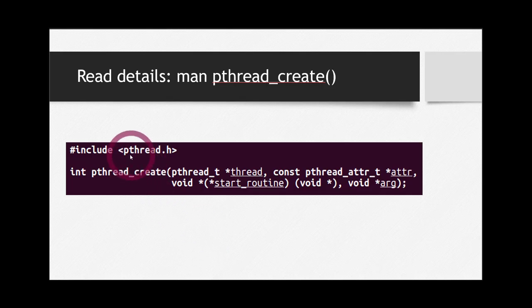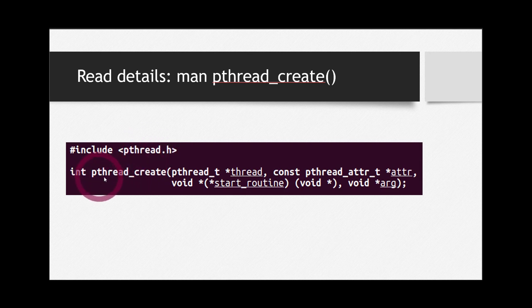We are going to use the library pthread.h to create threads in C language. In Linux, we will be using this library pthread.h. The main function we will use to create threads is pthread_create. If you want to look at the functionality and other details of this function, you can look it up in the manual pages of Linux by typing 'man pthread_create' in your Linux terminal. You can see details for this function or any other function you want.